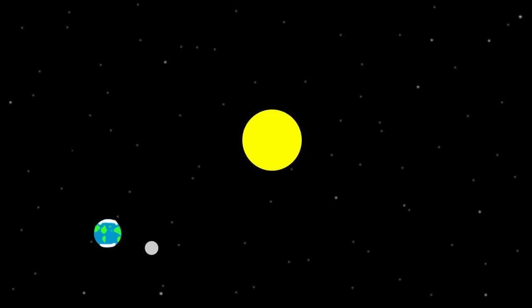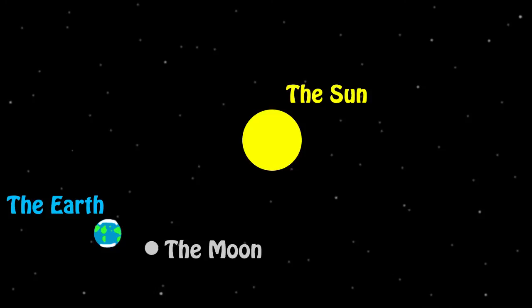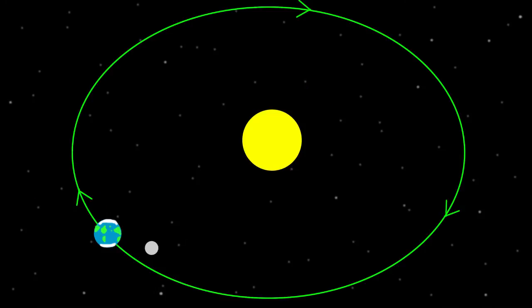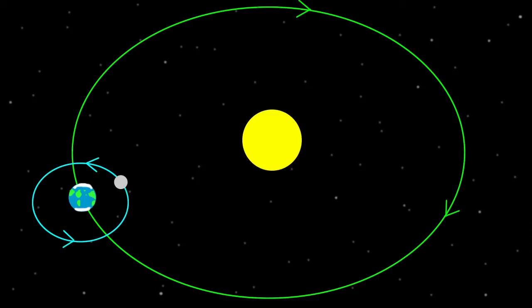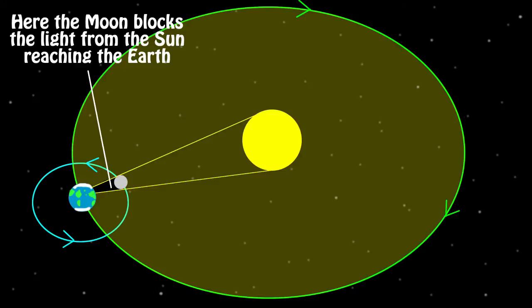It may be easier to understand if you look at it this way. At the center of our solar system we have the Sun, and orbiting around it we have the Earth. Meanwhile, the moon is also orbiting around the Earth. As the Earth travels around the Sun and the moon travels around the Earth, occasionally the moon will end up between the Sun and the Earth — and this is what causes an eclipse.